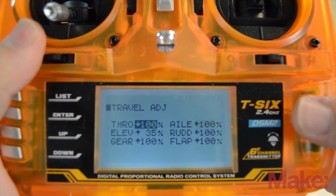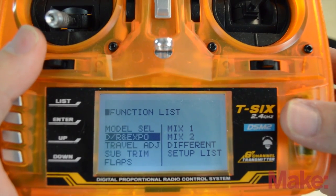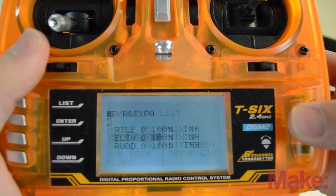Backing out of the travel adjust menu, we're going to go back to the menu and go to dual rates and expo. Click this.